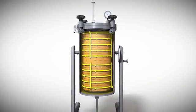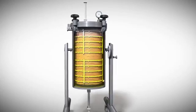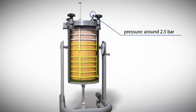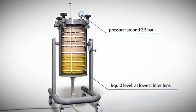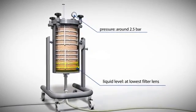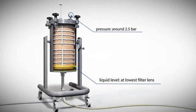Once the filter cake is fully formed, the individual layers touch each other slightly. The pressure is now at around 2.5 bar. The remaining liquid will be pressed through the filter sheets by air or gas until the level reaches the lower filter lens.